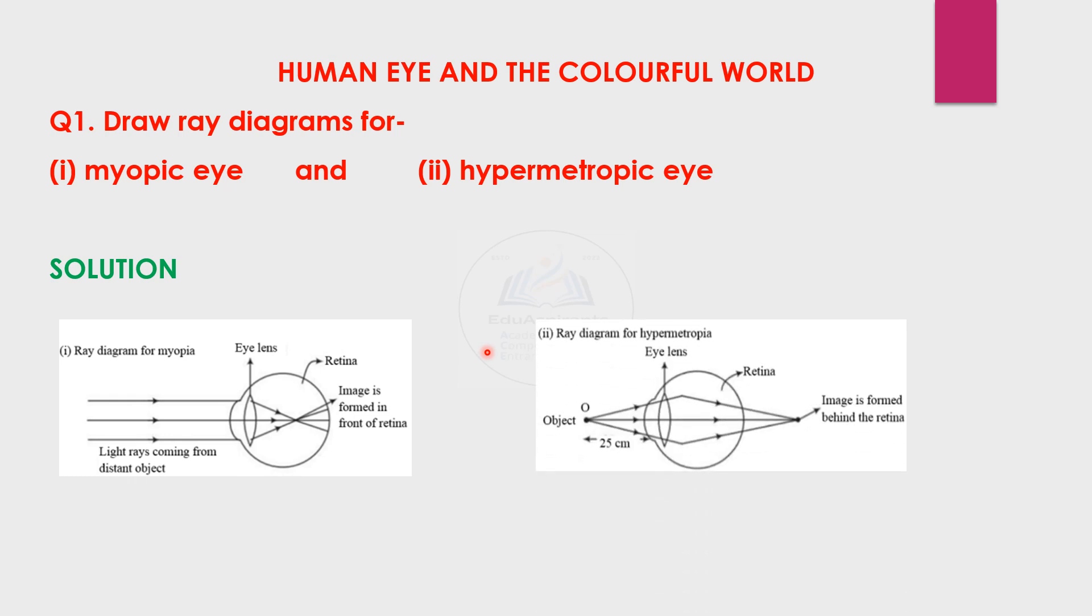Let us see for hypermetropia. Image is formed behind the retina. Keep revising the diagram so that you get full marks in this question.